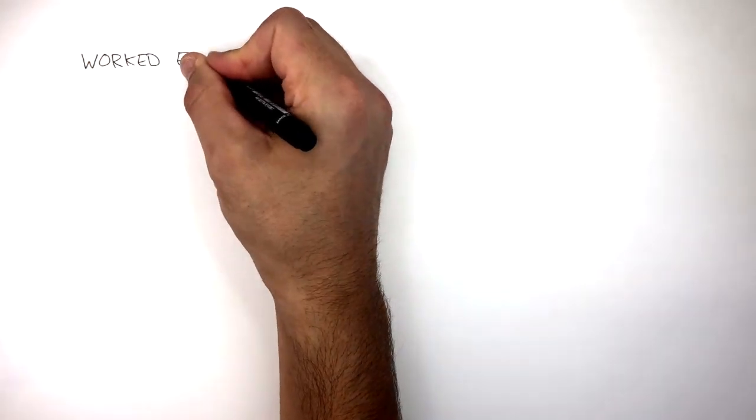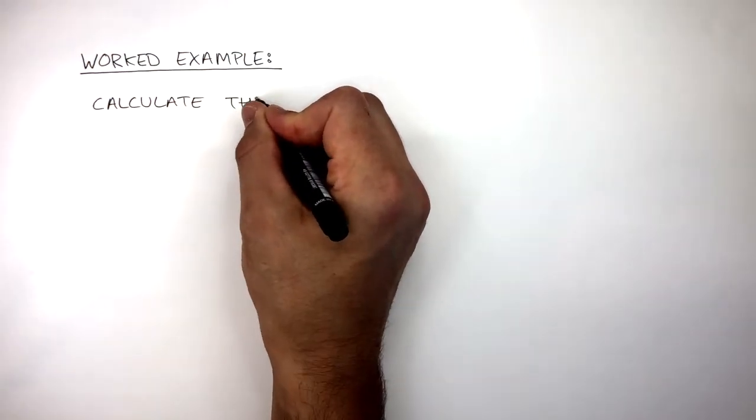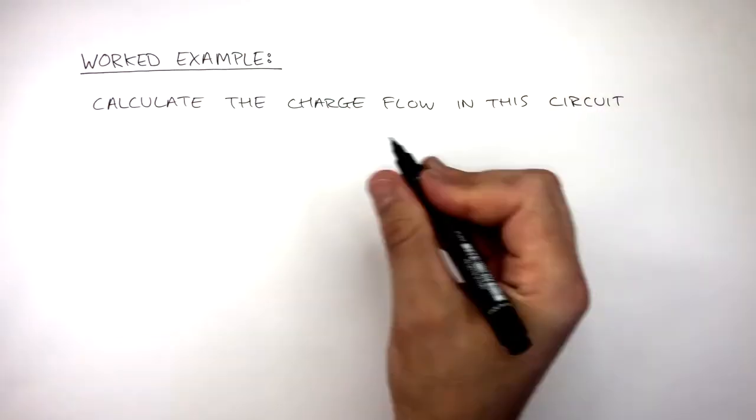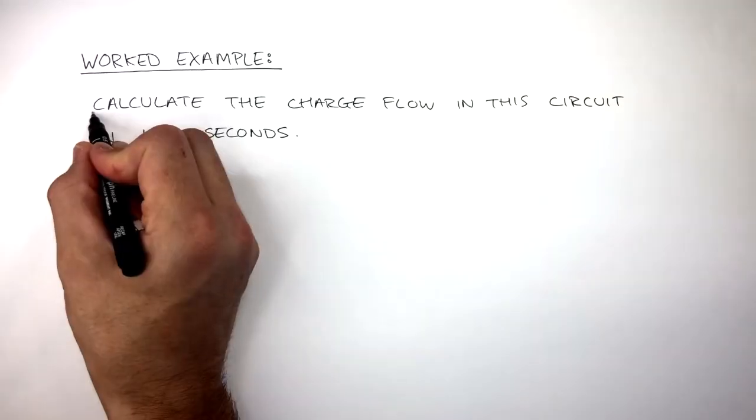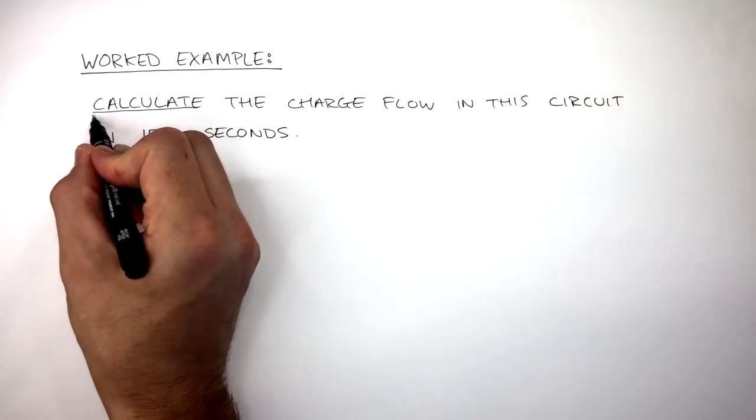A second worked example is: calculate the charge flow in this circuit in 15 seconds. In the exam you could be given a simple circuit diagram where there is an ammeter reading next to the ammeter on the circuit.